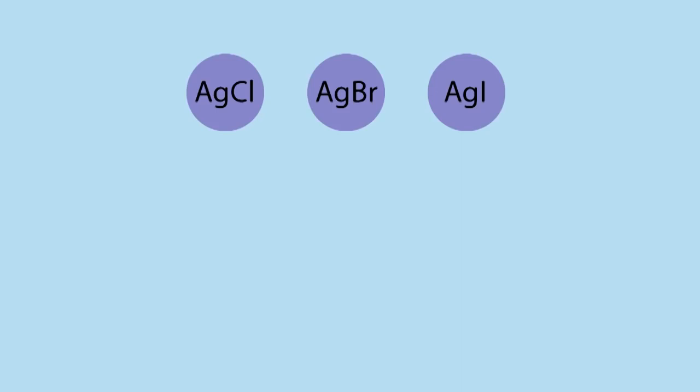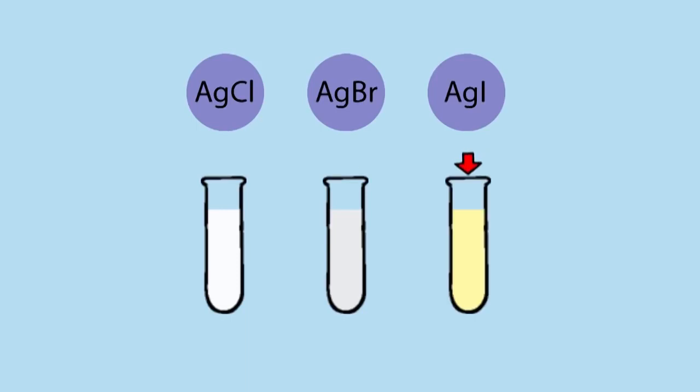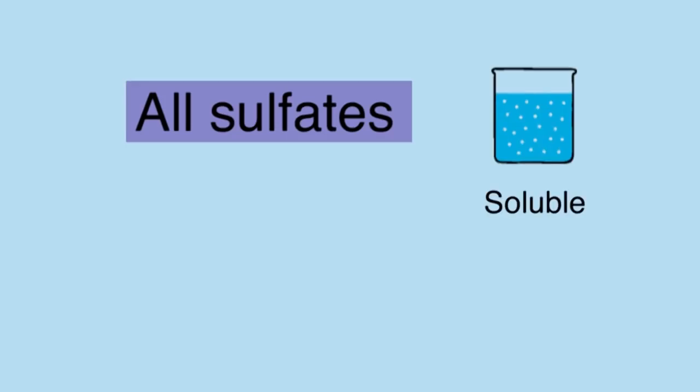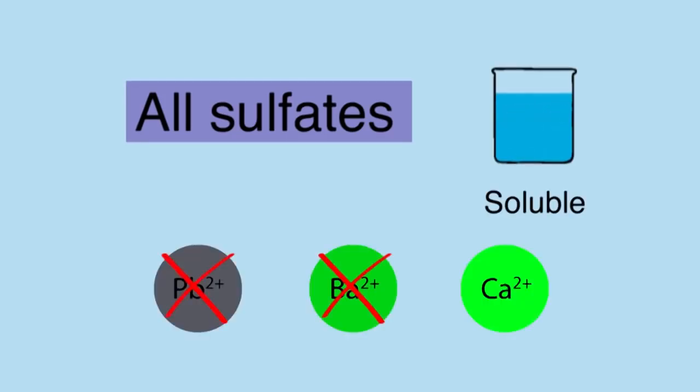We can distinguish between the different silver halides because they each have a characteristic colour and behave differently in the presence of concentrated or dilute ammonia. All sulfates are soluble, except for lead, barium, and calcium.